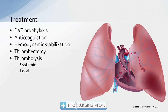For treatment: DVT prophylaxis to eliminate further clot formation, anticoagulation, and hemodynamic stabilization to maintain blood pressure and perfusion. We may perform a thrombectomy — using a catheter to physically remove the clot from the lung. Or we may do thrombolysis either systemically to break down all clots, or locally by catheterizing to the affected vessel and injecting TPA directly into that clot, avoiding the need for systemic thrombolysis.